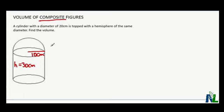To find the volume, you need to find the volume of the hemisphere and add that to the volume of the cylinder.